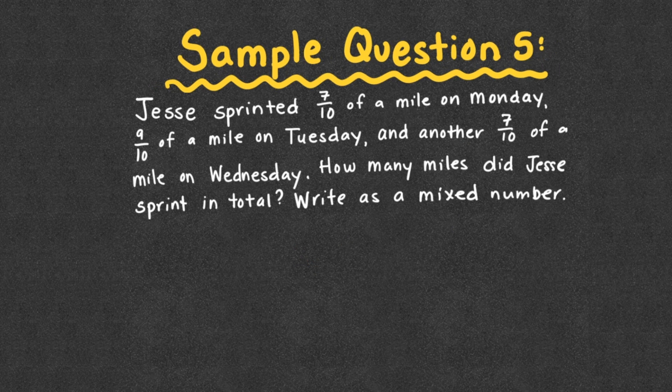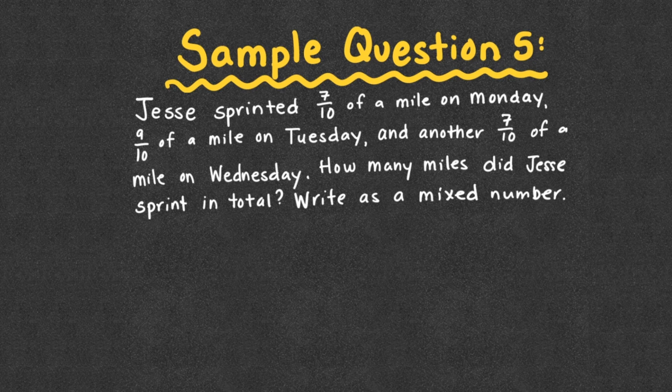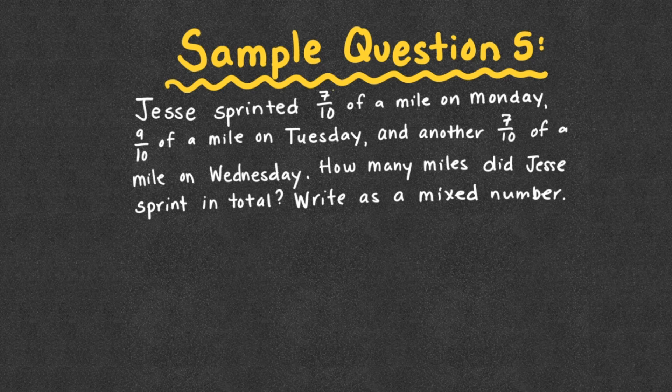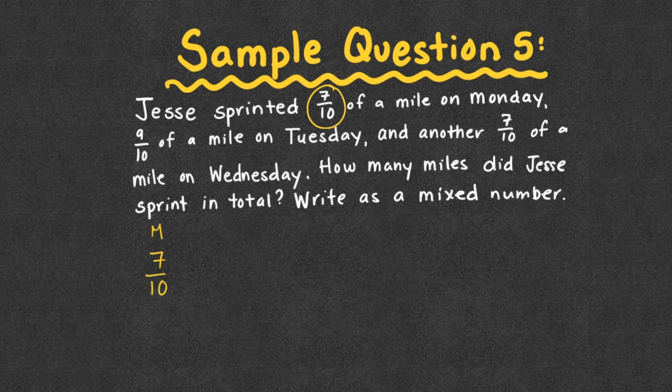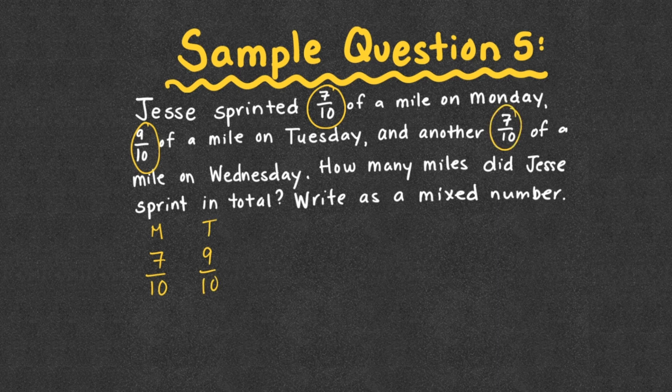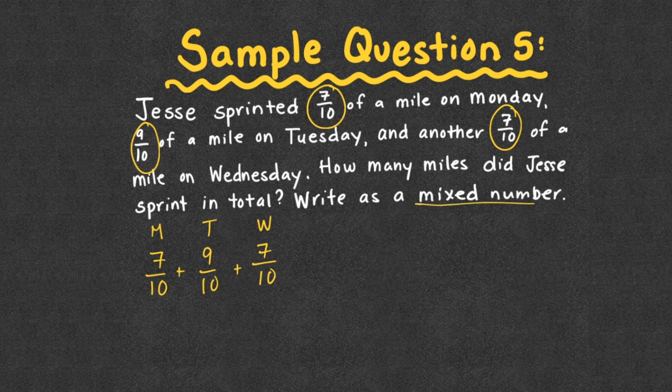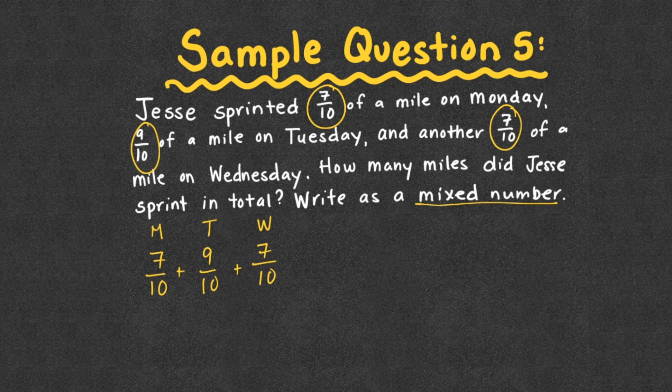Sample question 5: Jesse sprinted 7 tenths of a mile on Monday, 9 tenths of a mile on Tuesday, and another 7 tenths of a mile on Wednesday. How many miles did Jesse sprint in total? Write as a mixed number. So we know Jesse sprinted 7 tenths on Monday, 9 tenths on Tuesday, and another 7 tenths on Wednesday. How many miles did he sprint in total? So that's going to tell me to add, and it wants me to write as a mixed number, which should be a good indicator that I end up with an improper fraction.